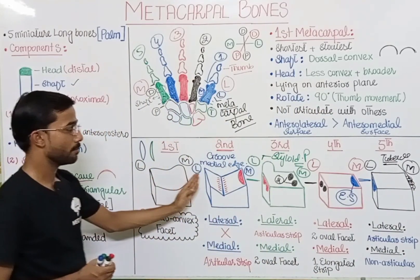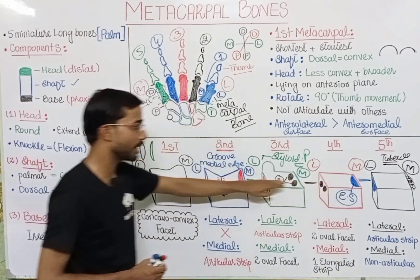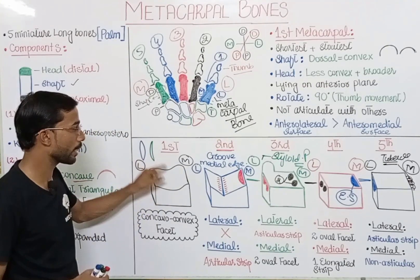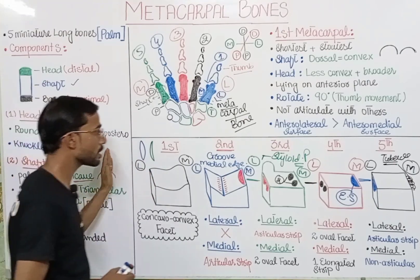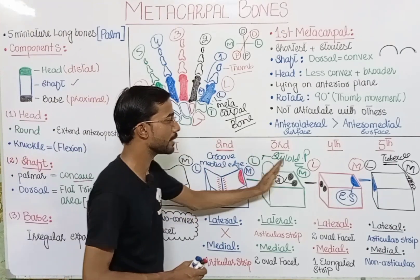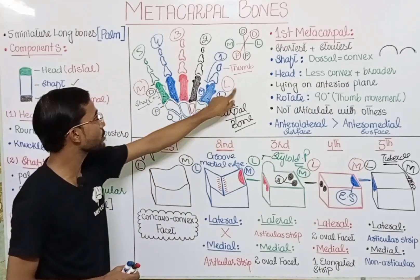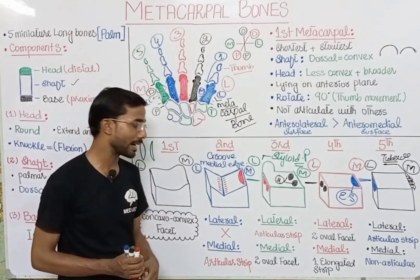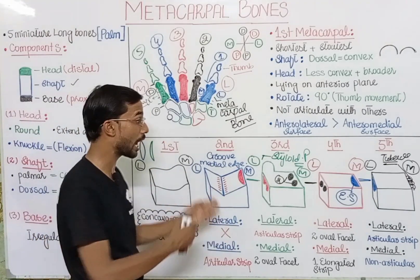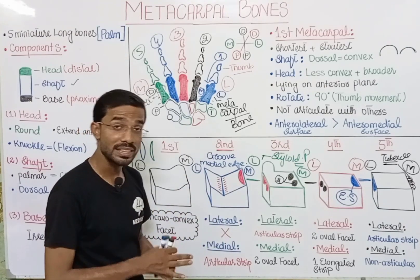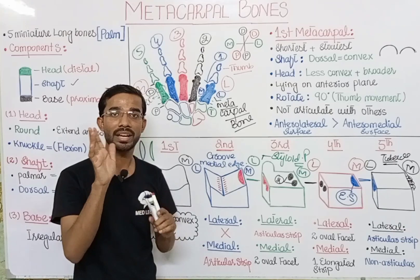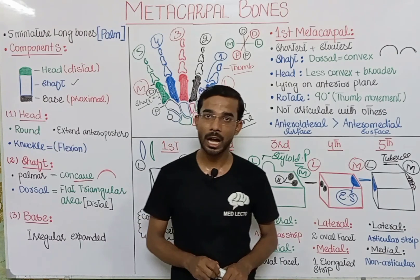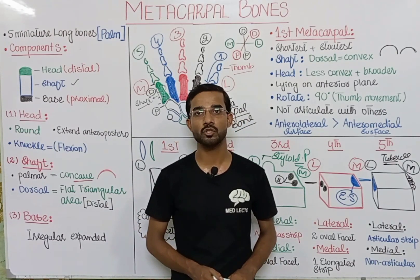So all metacarpals form articulations with each other except the first, which does not form any articulation. The pattern goes lateral to medial, lateral to medial, and so on. The first metacarpal is always separate, which allows the thumb to move freely. If you have any questions, you may ask in the comment section. Thank you so much.